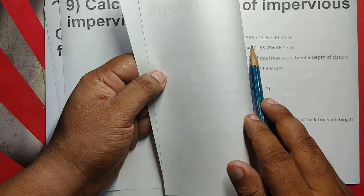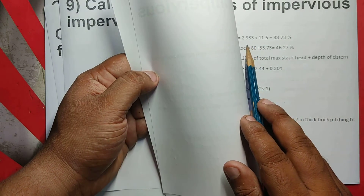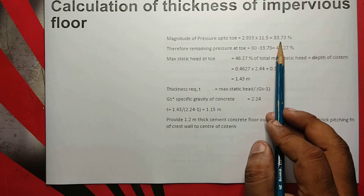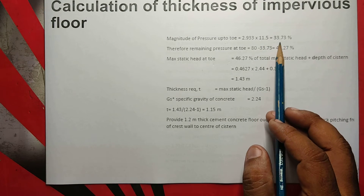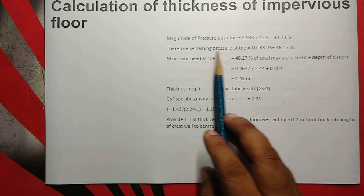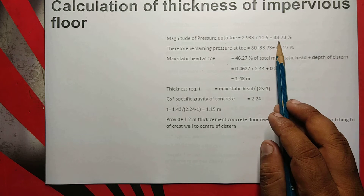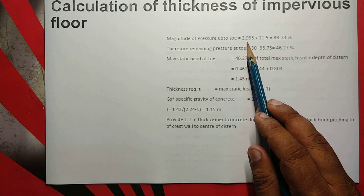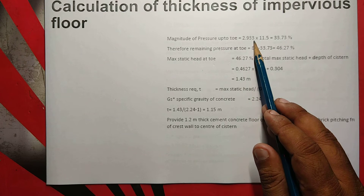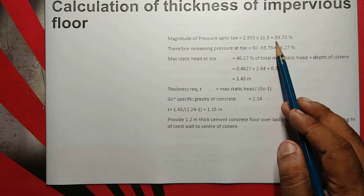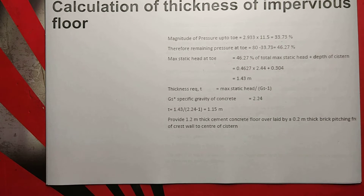We're going to get pressure. It's 2.933. It's 11.5 meters. It's magnitude of pressure, the actual pressure. It's magnitude of 1 meter. It's 2.933. It's magnitude of pressure. It's 33.73.